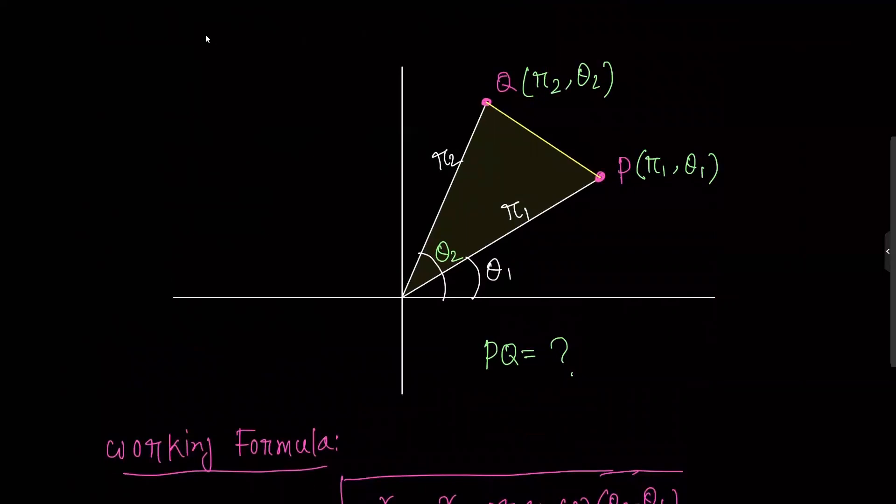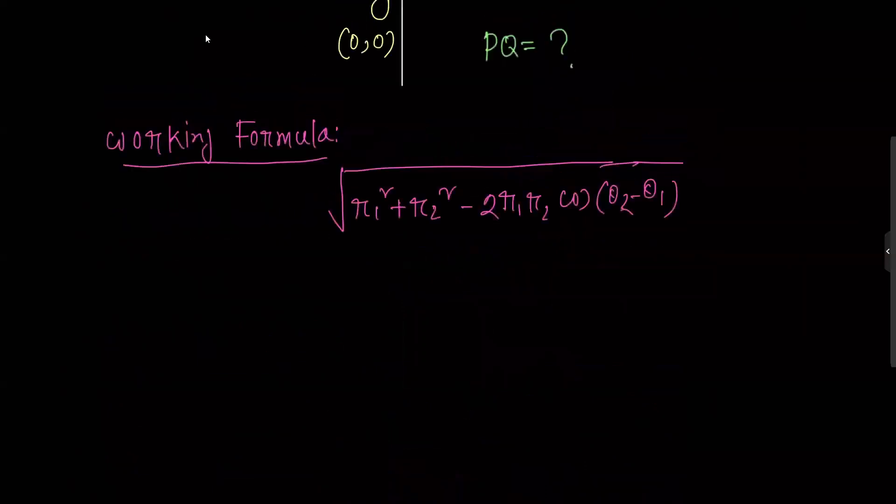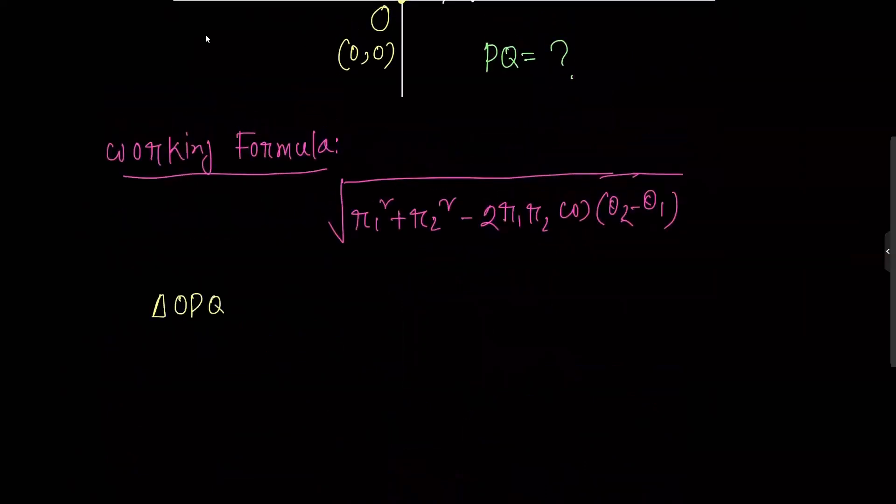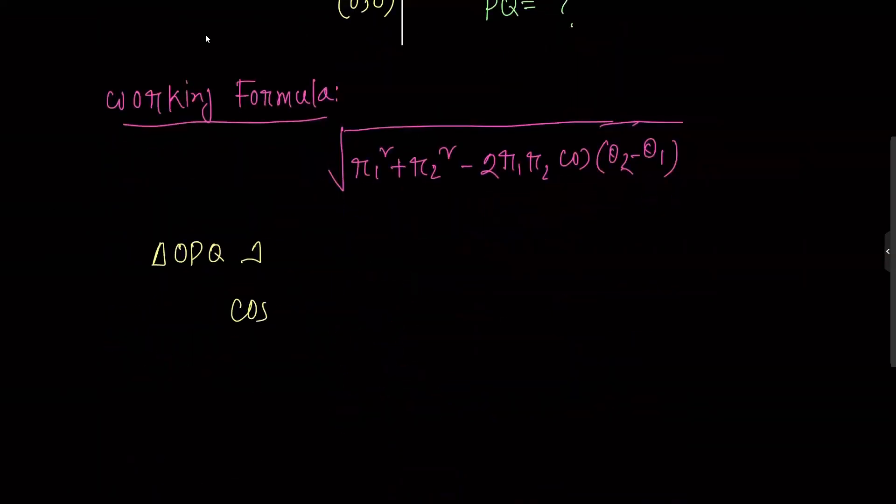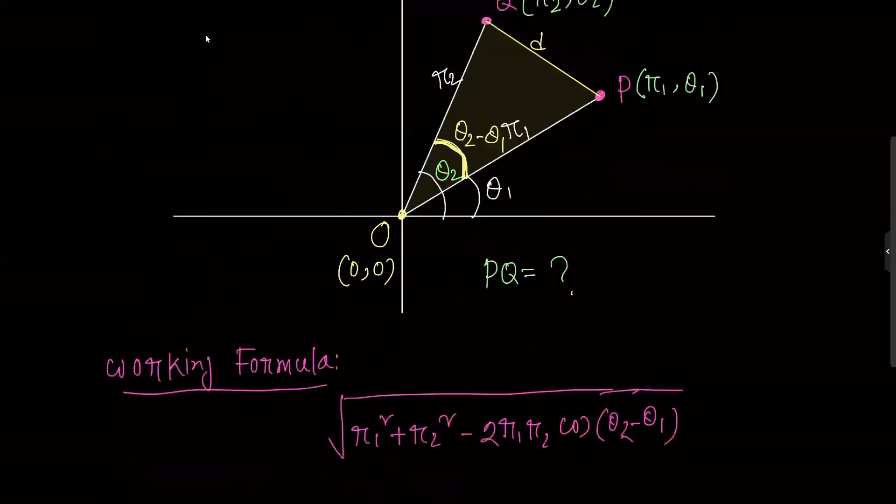Let me show you how we derive this. We have triangle OPQ, where O is at the origin. The angle at O is theta2 minus theta1, because P has vector angle theta1 and Q has vector angle theta2. So the angle between them is theta2 minus theta1.